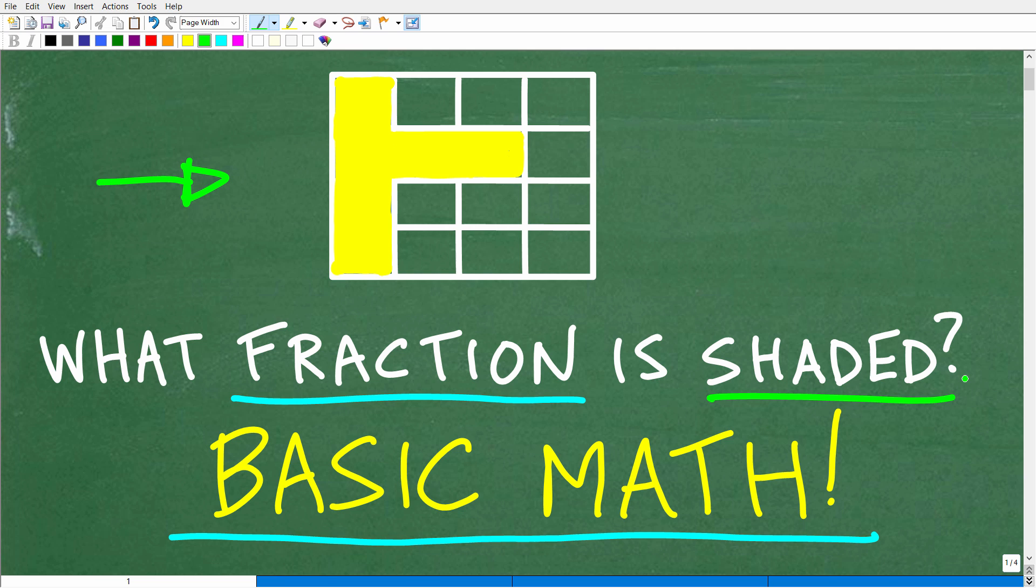Do not use a calculator, but we need to make a couple quick assumptions here. We have to just assume that this is a square, and inside this square are little equal distance squares. In other words, all these squares are the same size inside of this bigger square. All right, so that's the question.